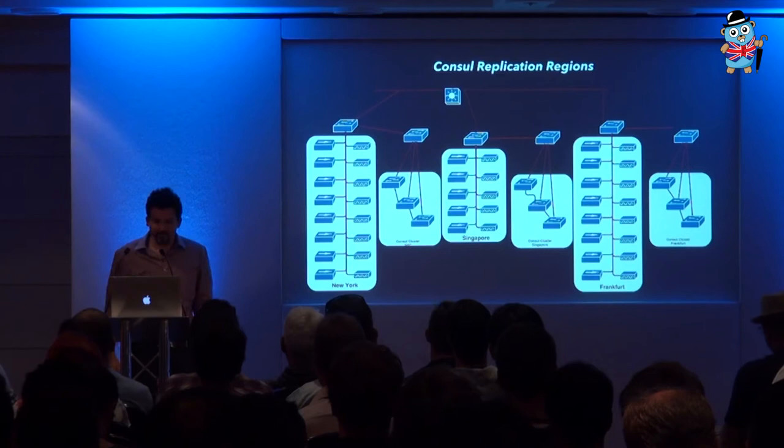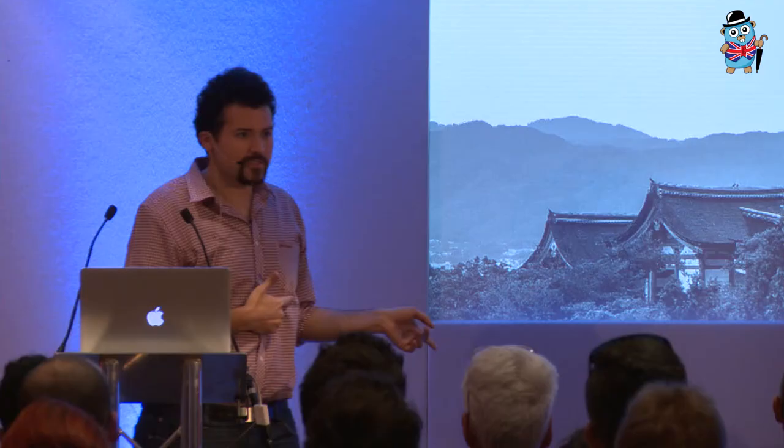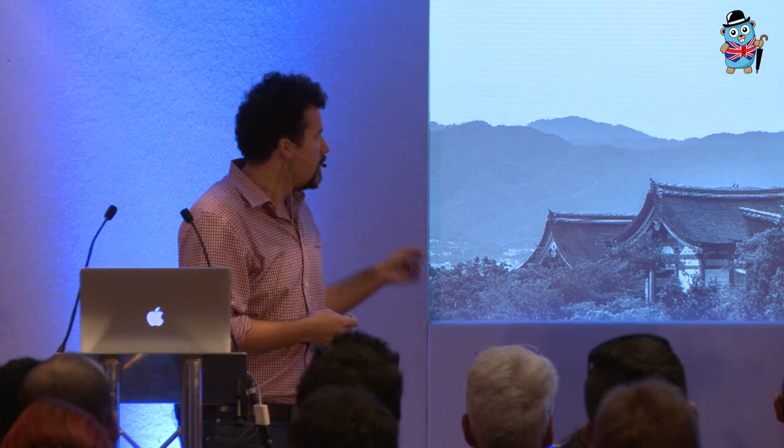I want to briefly touch on this: traditionally, service discovery tools like etcd and Zookeeper were all API-based. A lot of the newer ones like Consul are actually exposing DNS SRV records. DNS SRV records define what the application and port are, and you can integrate applications that don't know about service discovery. As you look for a service discovery tool, this is something you really want to look for.